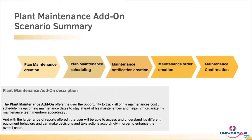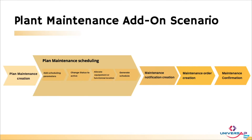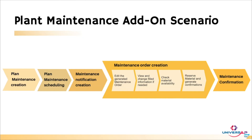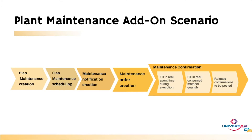The general process consists of five steps to conduct maintenance and generate the right scheduling. We start with the creation and proceed with scheduling — adding parameters, changing the plan status to active, allocating the equipment or functional location, and generating the schedule. Afterwards, we generate the notification, with all data passed from the plan. Then comes order creation, where we add additional information, check material availability, and proceed with confirmations. Once the real data is filled, we confirm the maintenance and the system generates postings for the service confirmation and material consumption.